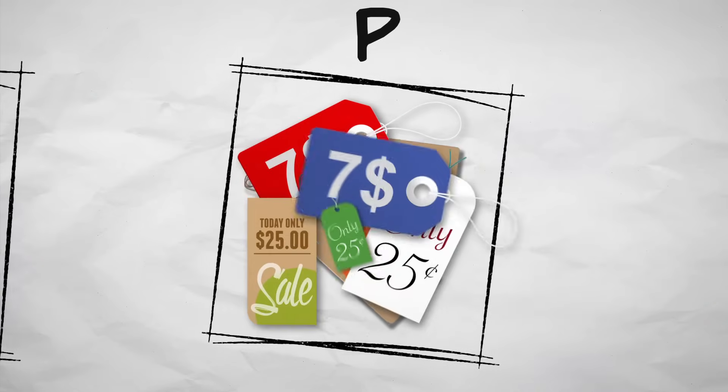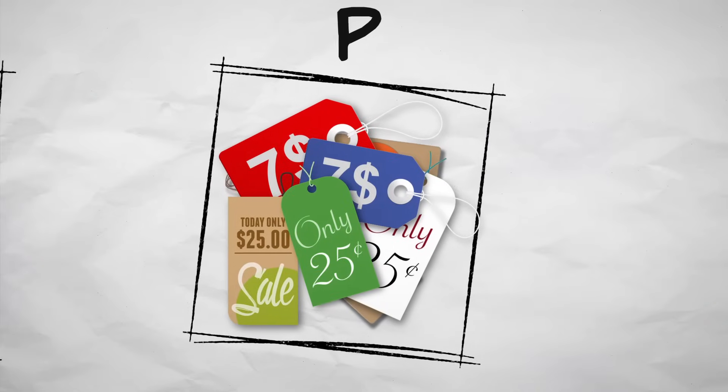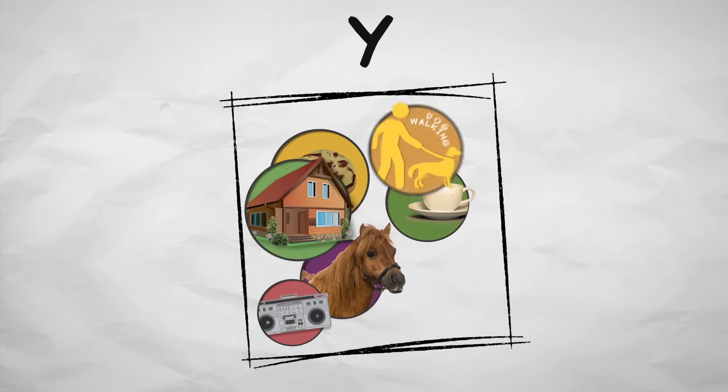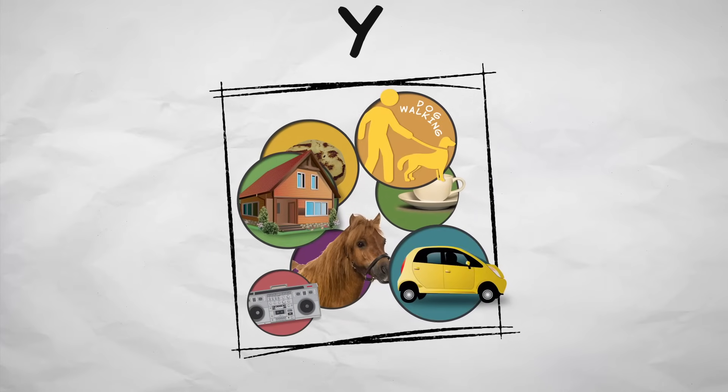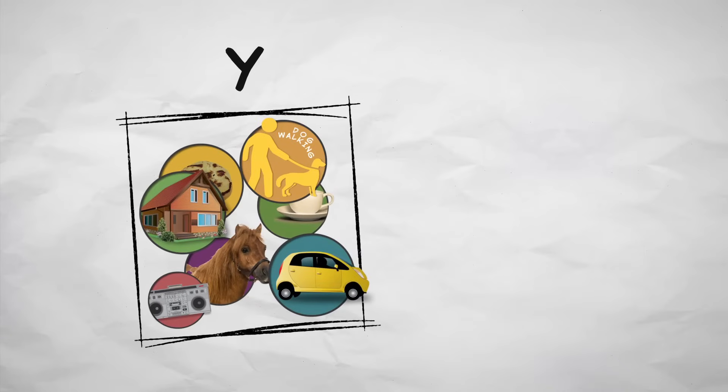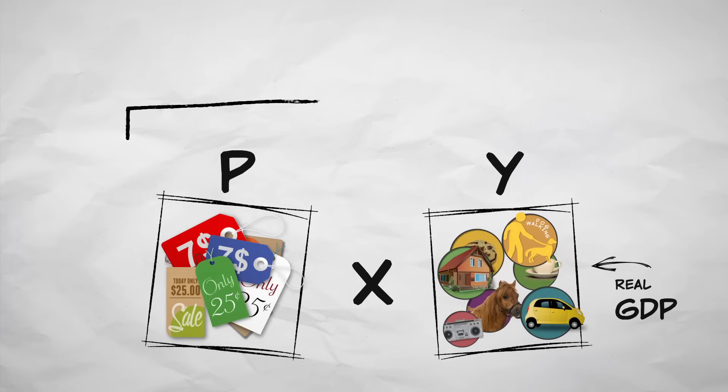P would be the price level of all finished goods and services in an economy. And Y would be all the finished goods and services sold in an economy. So Y is real GDP, and when you multiply it by a measure of the price level, you get nominal GDP.